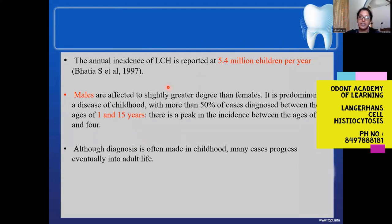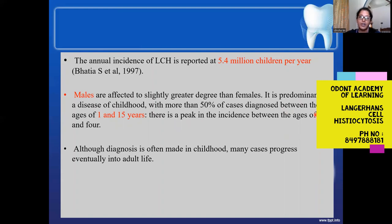This disease has an annual incidence of 5.4 per million children per year and is seen more commonly in males than females. There is an age predilection between 1 to 15 years, with 50% of cases diagnosed in this range. The peak incidence is between 1 to 4 years, though the condition can progress into adult life.